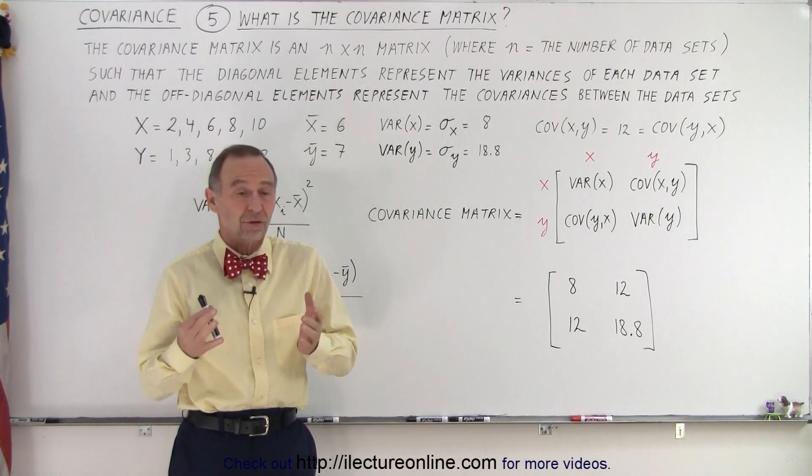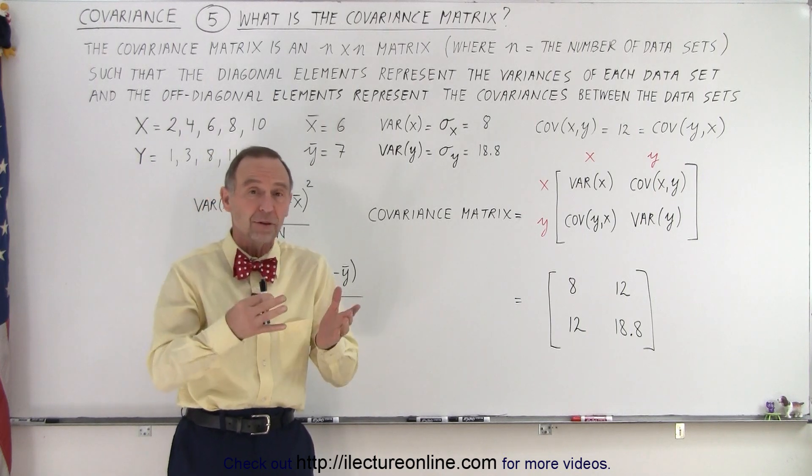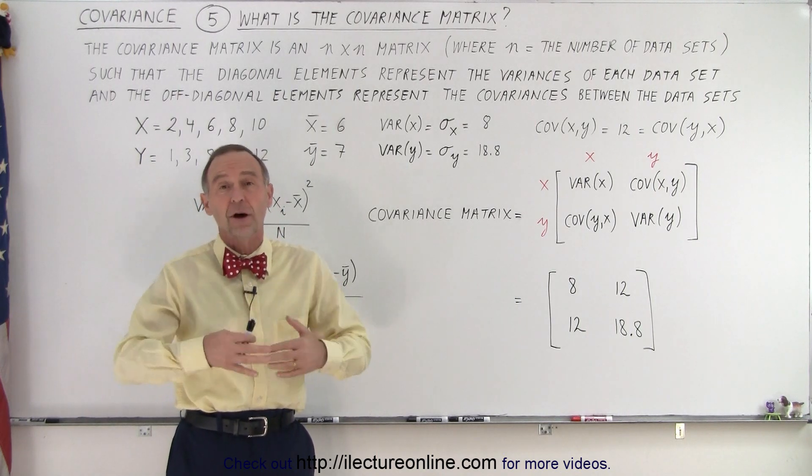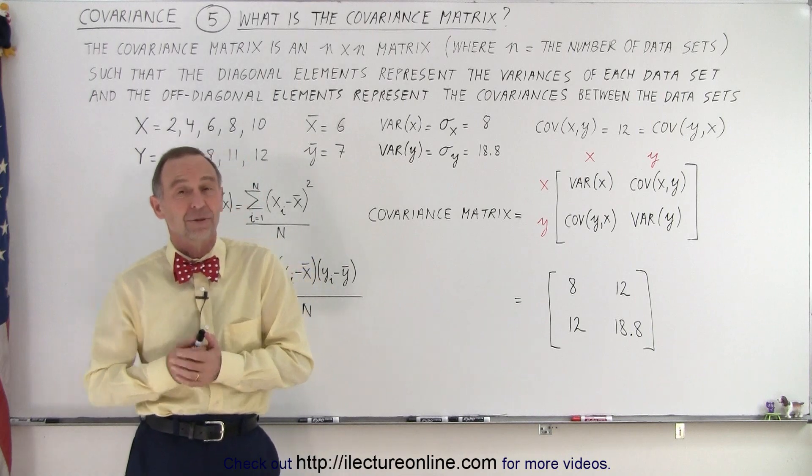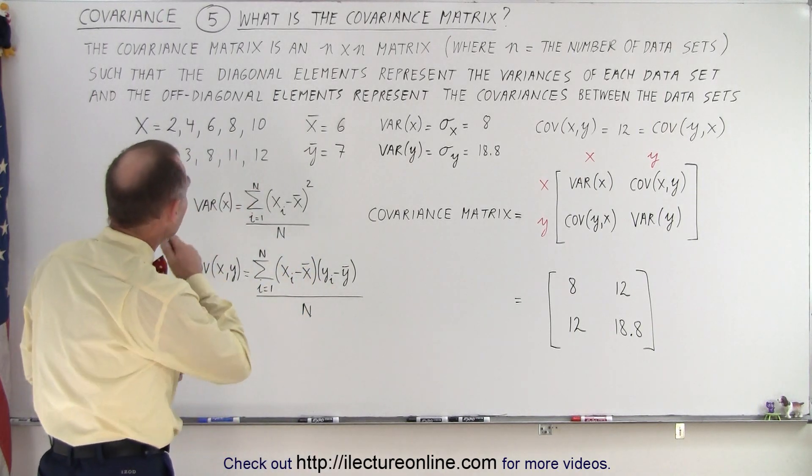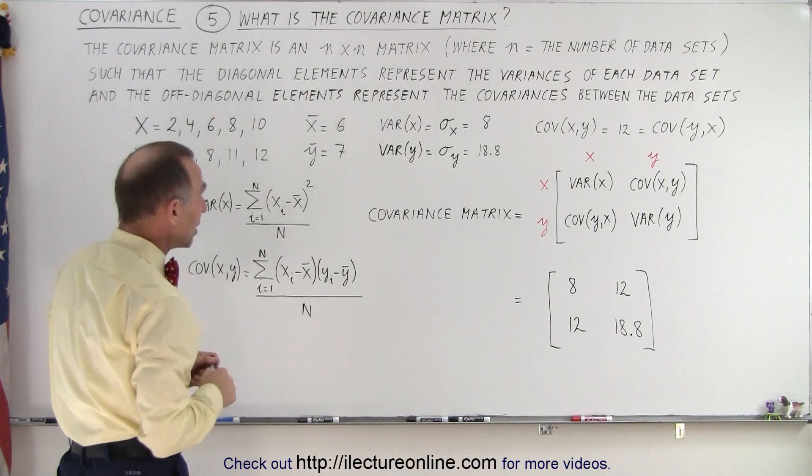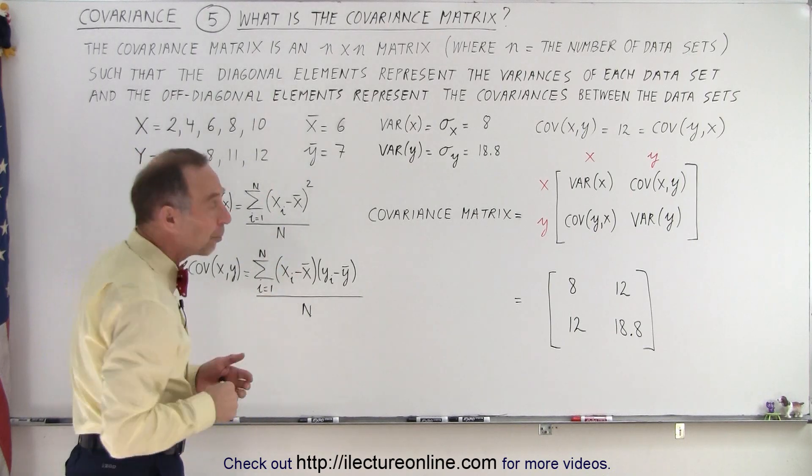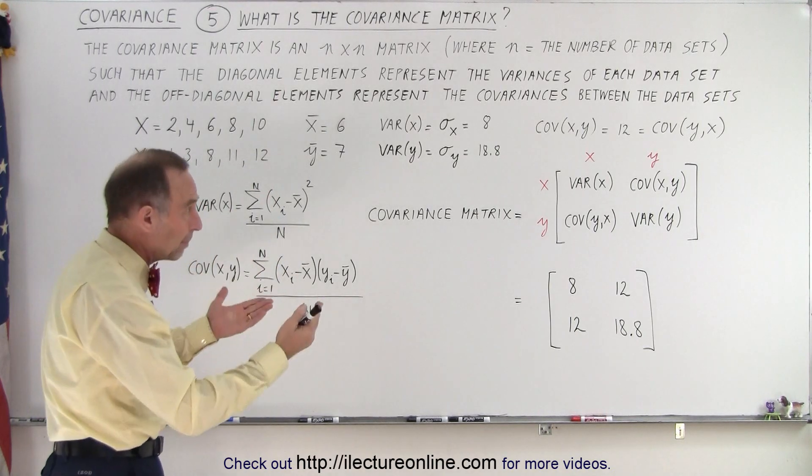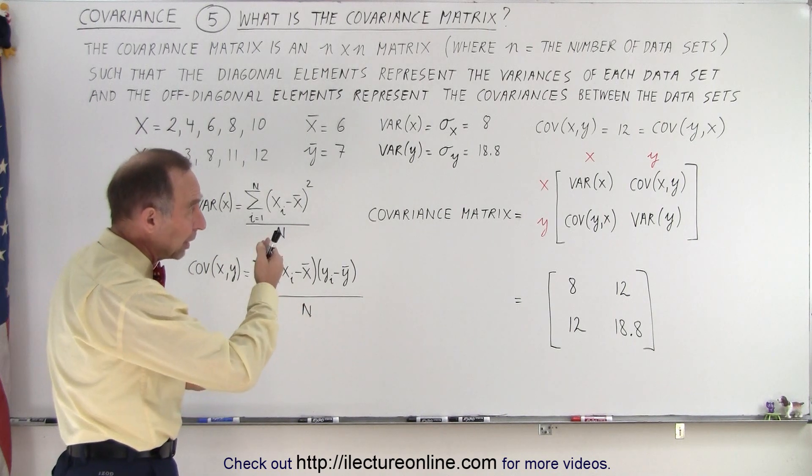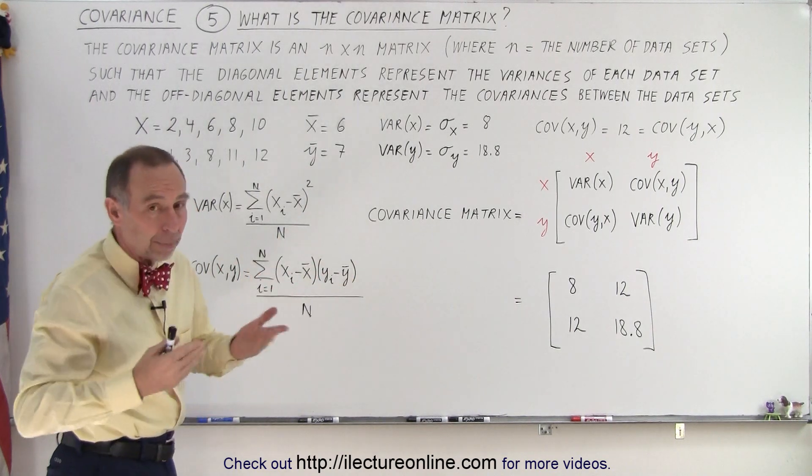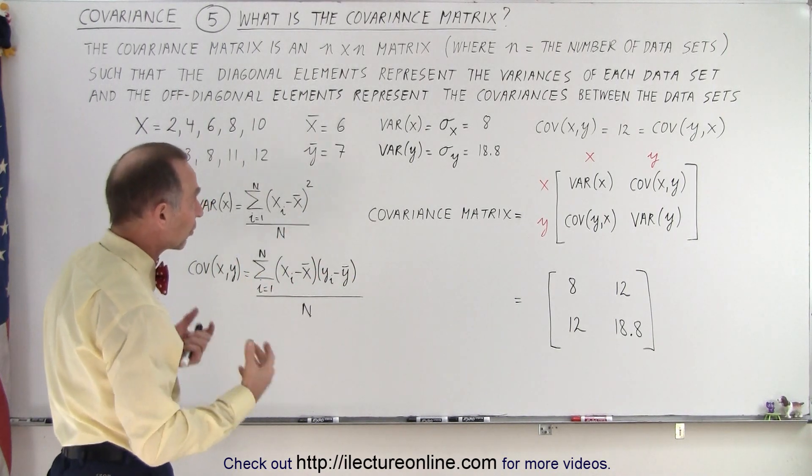The covariance matrix is just a matrix where we put the variances and covariances of and between data sets. Let's read the definition. The covariance matrix is an n by n matrix, where n is the number of data sets, so it's typically a square matrix. The size of the matrix simply depends on the number of data sets you're considering.